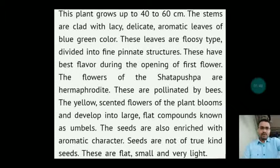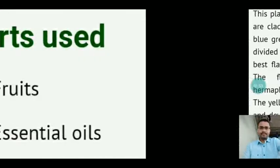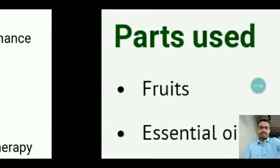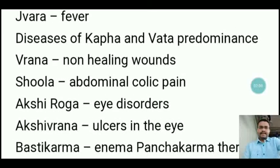The seeds are not of the true kind; they are flat, small and very light. Properties of the drug include fruits and essential oils. It is indicated in Jwara (fever), diseases of Kapha and Vata predominance, Vrana (non-healing wounds), Shula (abdominal colicky pain), Akshi Roga (eye disorders), Akshi Vrana (ulcers in the eye), and in Basti Karma as enema in Panchakarma therapy.